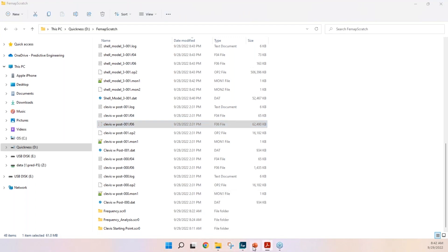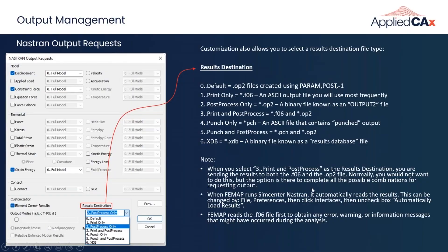The big takeaway is that the default options use the least amount of space, but there are seven options available. Punch and print-and-punch are options you'd need to specifically know you want. The default is good for most cases, and option 3 is also sometimes useful if you'd like to see displacements, stresses, and strains in a NASTRAN text file.